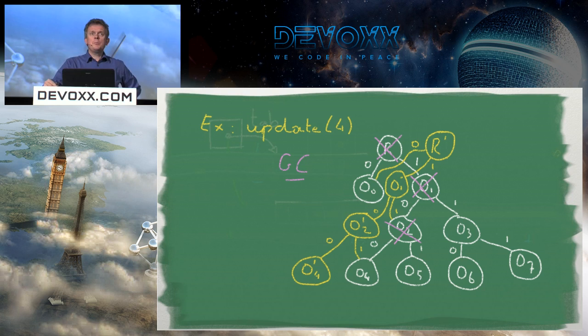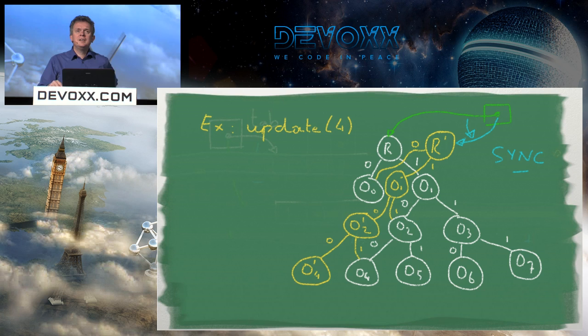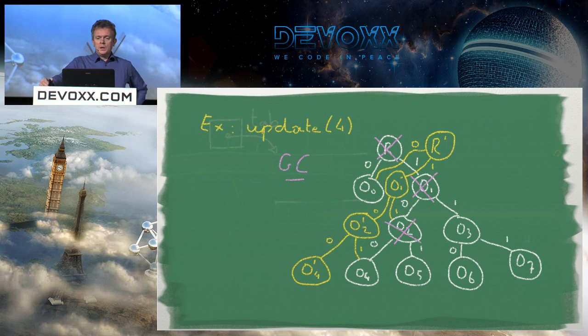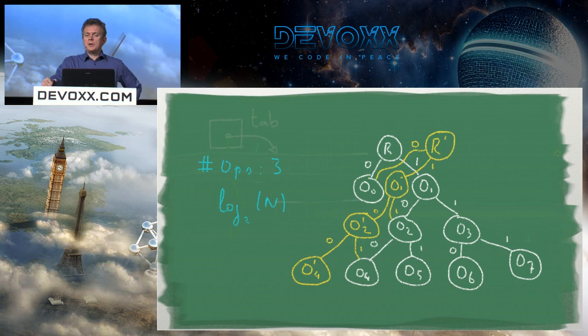Now I have two trees: one pointed to by R (the original) and one pointed to by R-prime (a mix of new and shared nodes). To switch from one tree to the other, I do exactly the same as with the array: synchronize the change of a single pointer, which is a very fast operation. The unused nodes will be taken care of by the garbage collector.